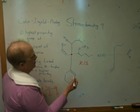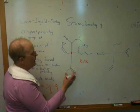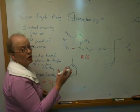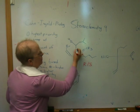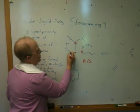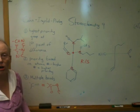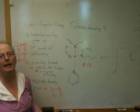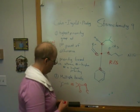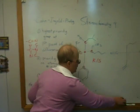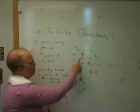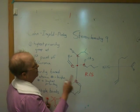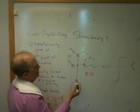So how do I assign priorities? I work my way out level by level looking for the first point of difference. So at the first level, I'm going to use different colors. At the first level, all of these groups are carbons. That means they tie at the first level. What is the first level? The first level is one bond out. So they're all in a tie. I can't assign a priority. So what do I do? I go to the next level out.